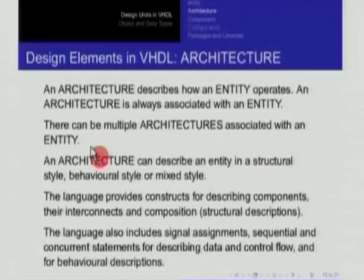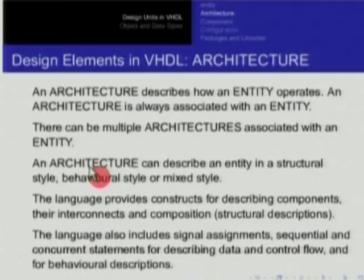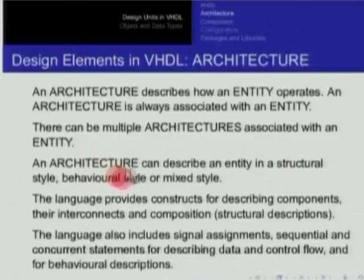The architecture can describe the working of an entity in one of two ways. It could describe it in a structural style — for example, saying that the architecture of the D flip-flop contains two NOR gates cross-connected. It is describing the D flip-flop as a list of components and their interconnection. Or it might describe it behaviorally — it might say that when the clock has a positive transition, the output Q should become the same as D. The architecture could be structural, it could describe components and interconnects, it could be behavioral, or indeed it could be mixed.